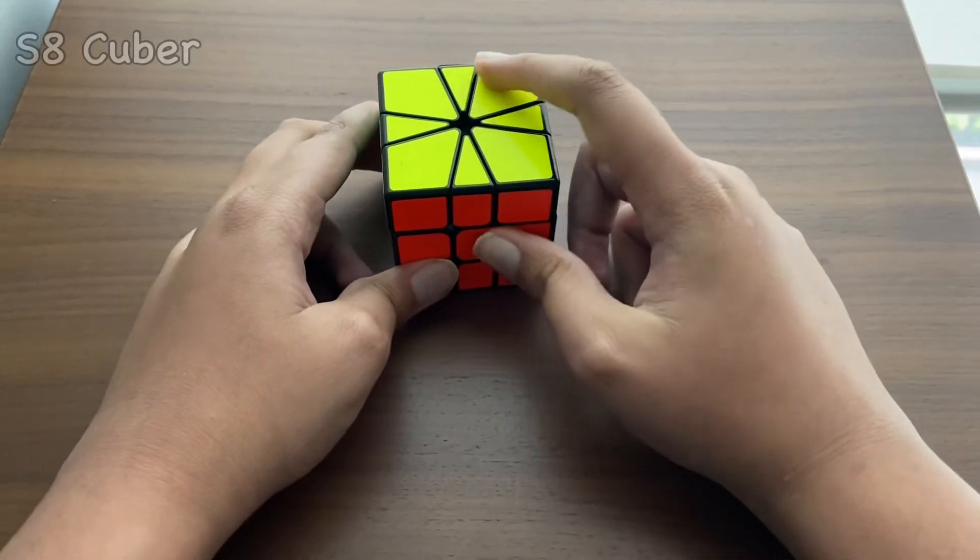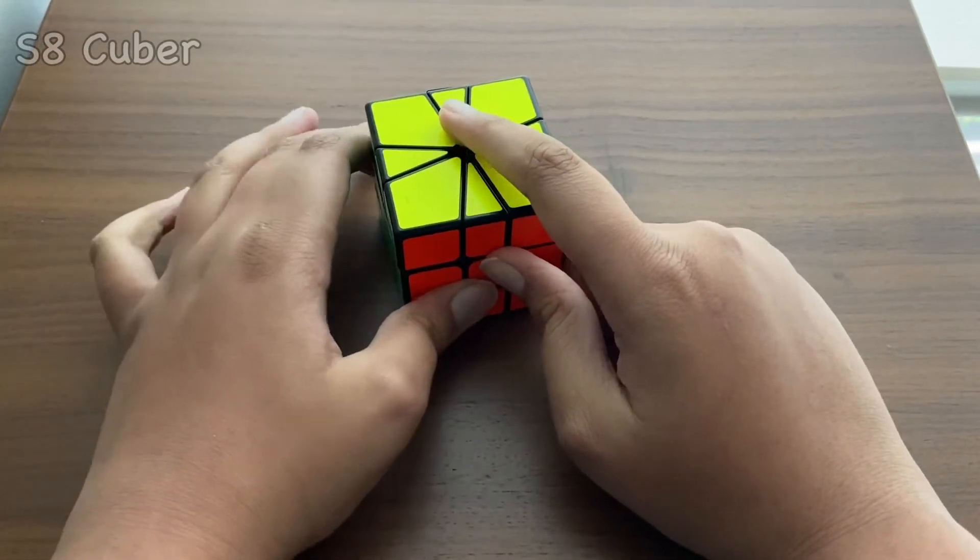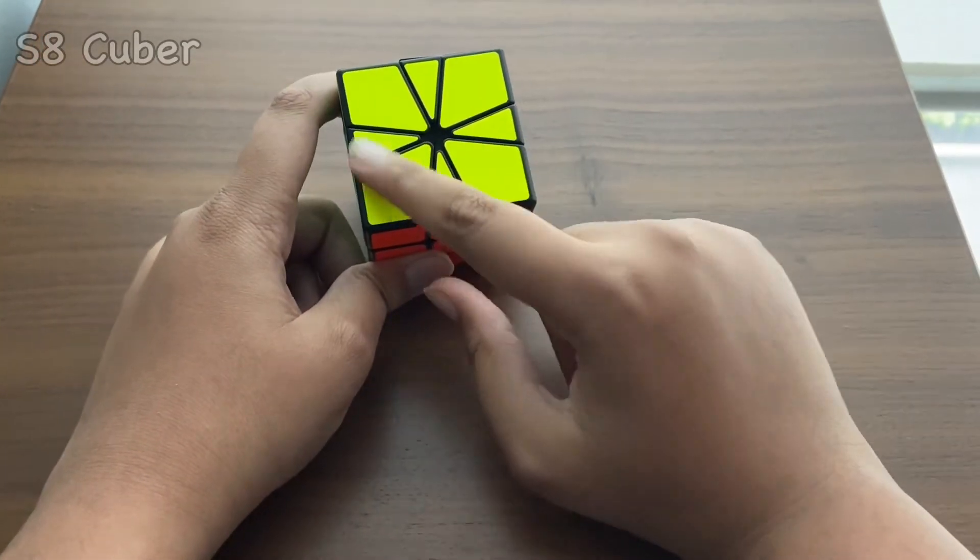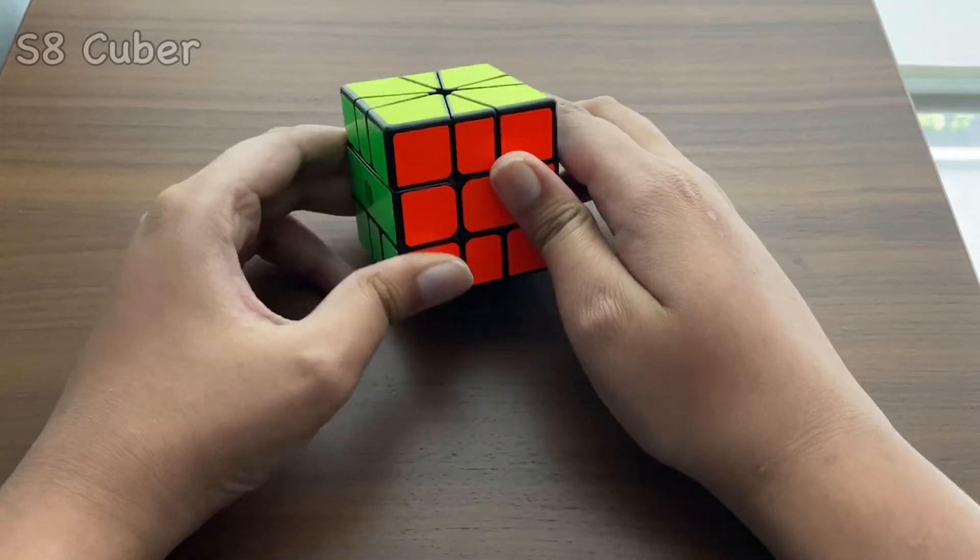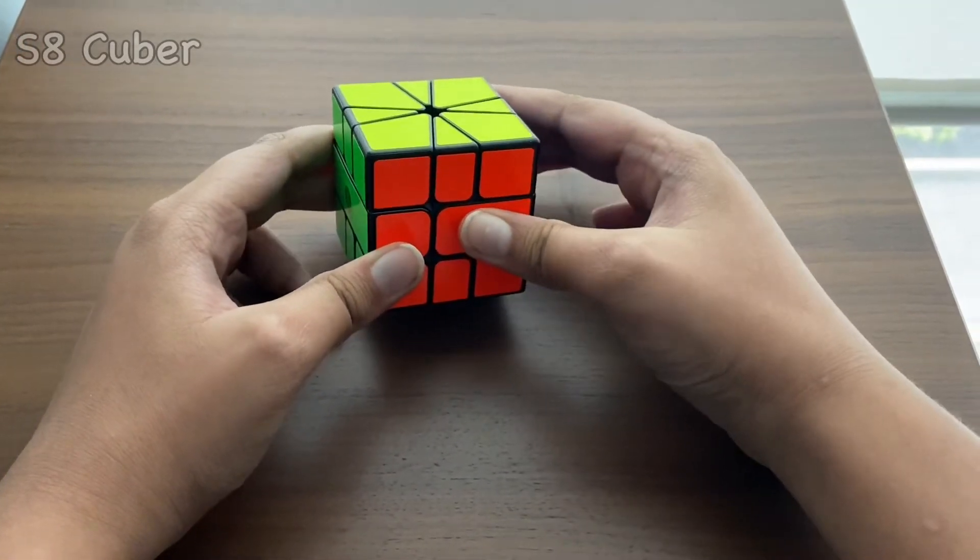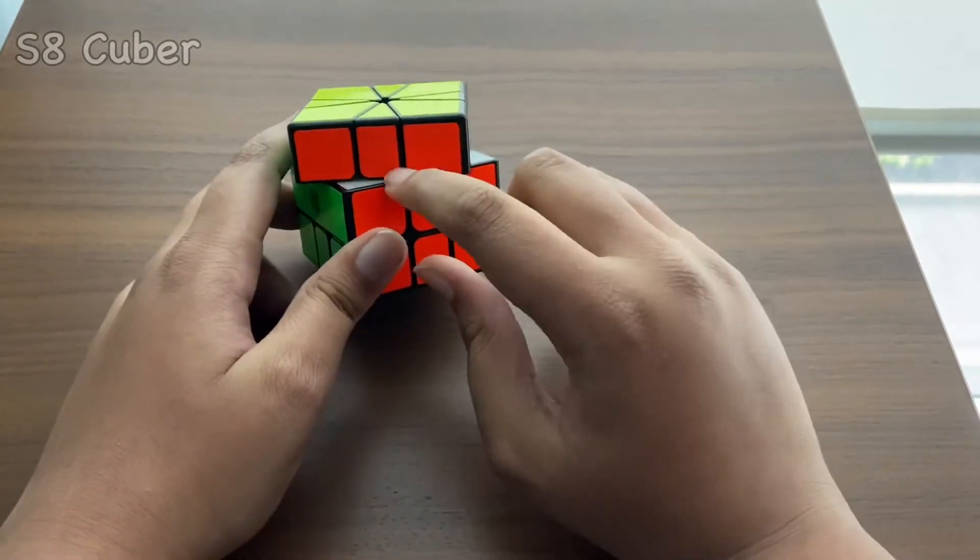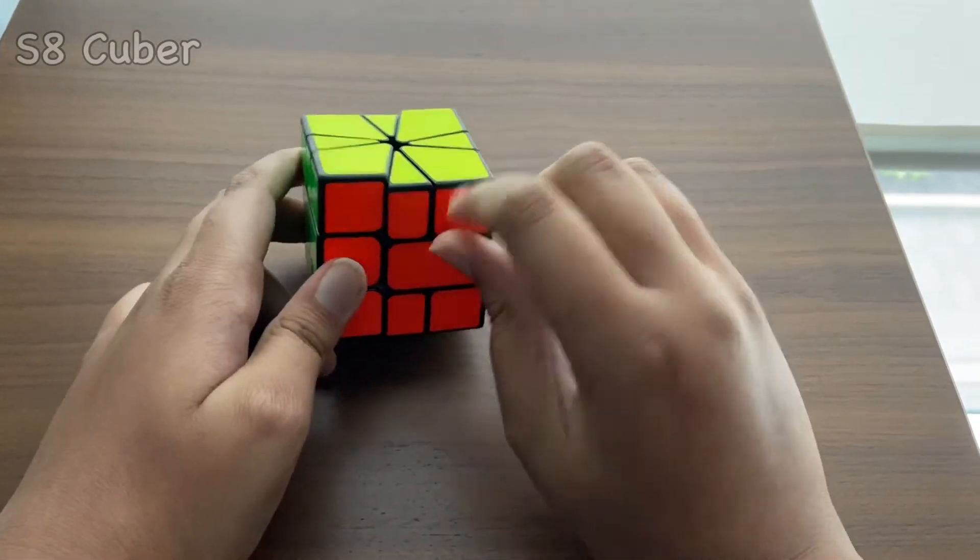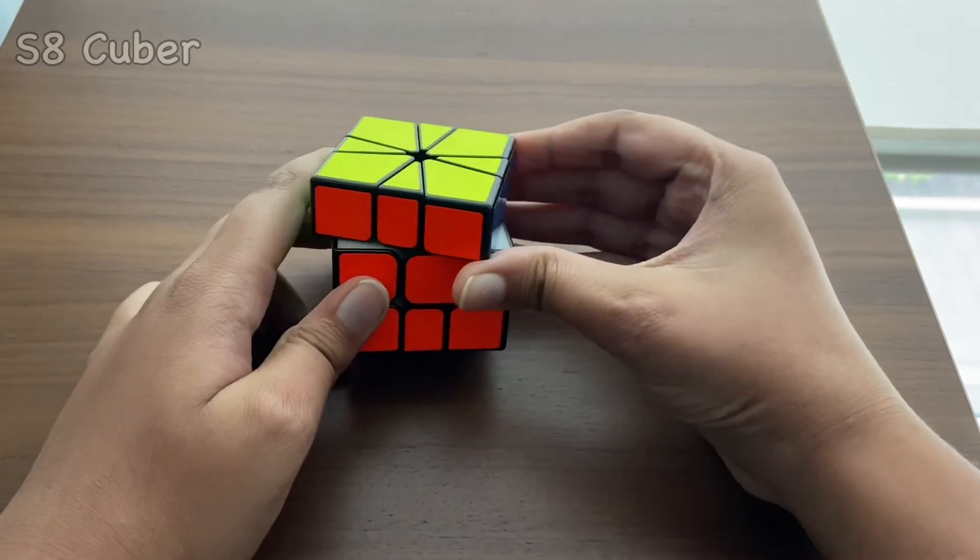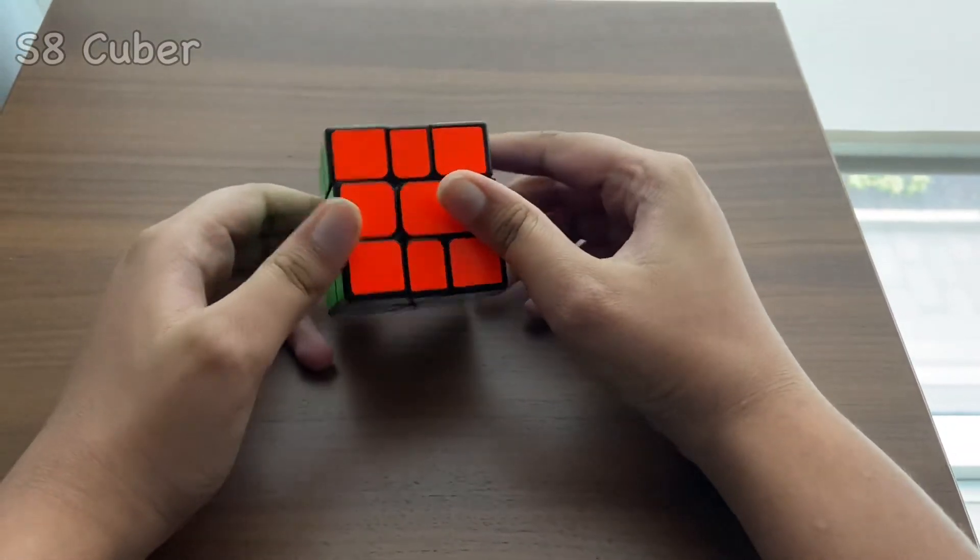So you see over here, the positive one is basically a clockwise rotation. So if I say one, this would be a one. Okay. See, that's a one because you're moving only one block here. So that's a one.